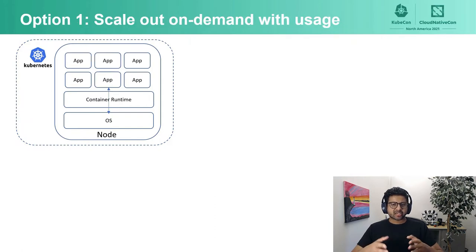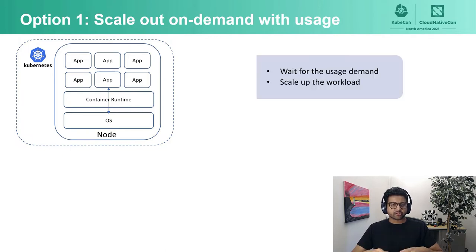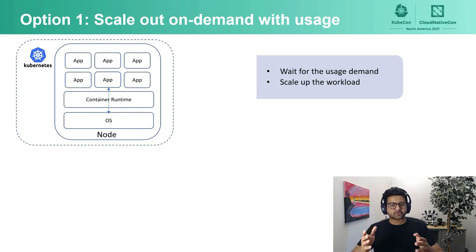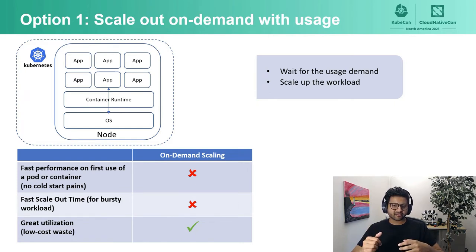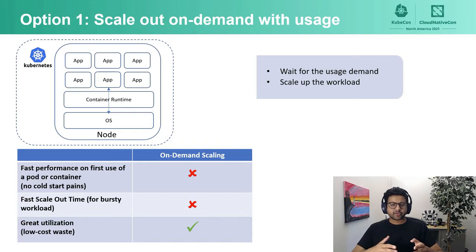Option one: scale out on demand with usage. Basically, wait for the usage demand and scale up the workload to meet the demand. Stacking this against our goals — this does well with using resources efficiently since new pods are spawned only when needed. However, this is prone to cold start pains and would have poor first-use performance. Also, this wouldn't be able to scale quickly to meet a sudden burst in the workload.